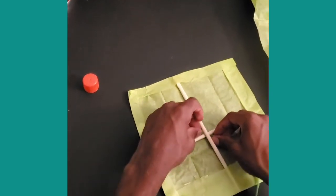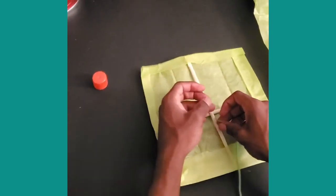If you want, cut a separate length of string and add it to the bottom of the kite for a tail.